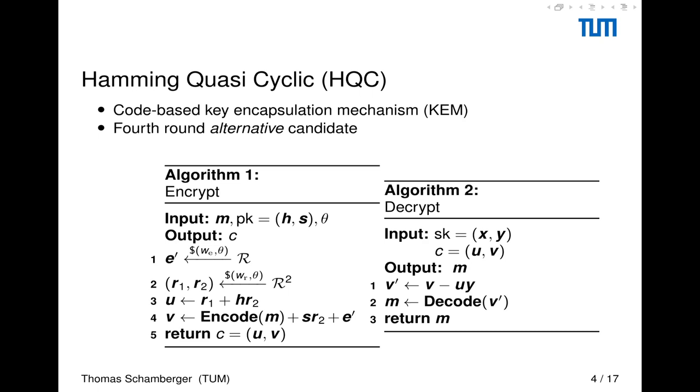Let me introduce you to the algorithm that we are going to attack. It's the Hamming Quasi-Cyclic, the HQC algorithm. It is a code-based key encapsulation mechanism, a so-called KEM. It is also a fourth-round alternative candidate in the NIST-PQ contest. Here you see the PKE version of the algorithm, where we have an encryption and a decryption. HQC is based on a concatenation of two error-correcting codes, which are here abstracted as ENCODE and DECODE.